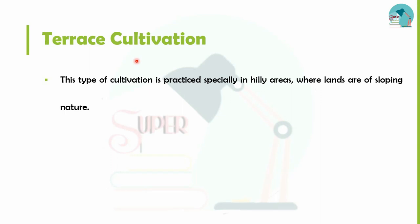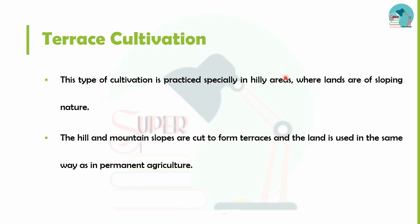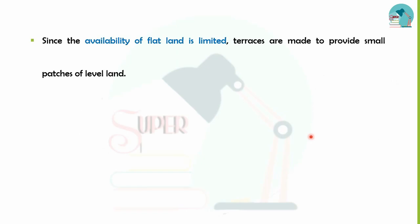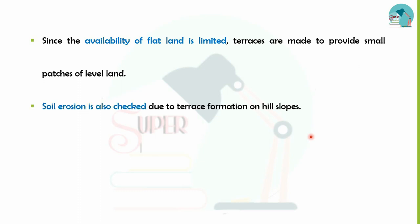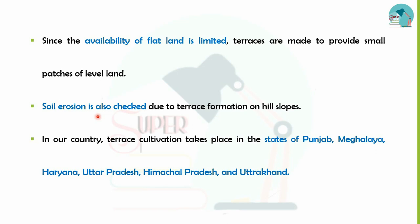Next is terrace agriculture. Terrace agriculture is practiced in hilly areas where the land has a sloping nature. Terraces are cut into the hillside to create flat platforms for cultivation. This prevents soil erosion in hilly areas. States like Punjab, Meghalaya, Haryana, Uttarakhand, and Himachal Pradesh follow terrace cultivation.